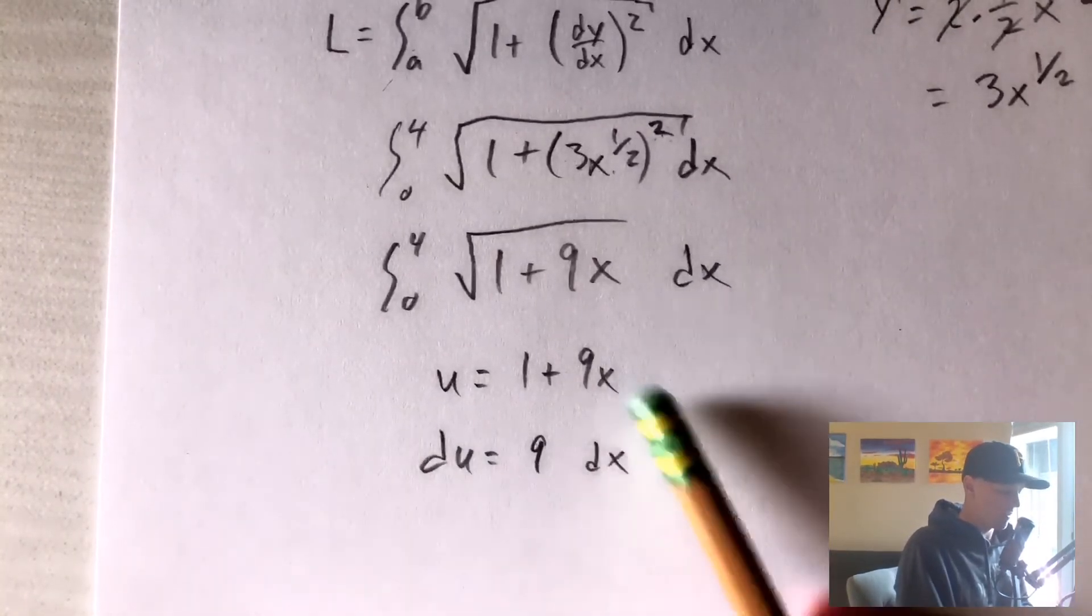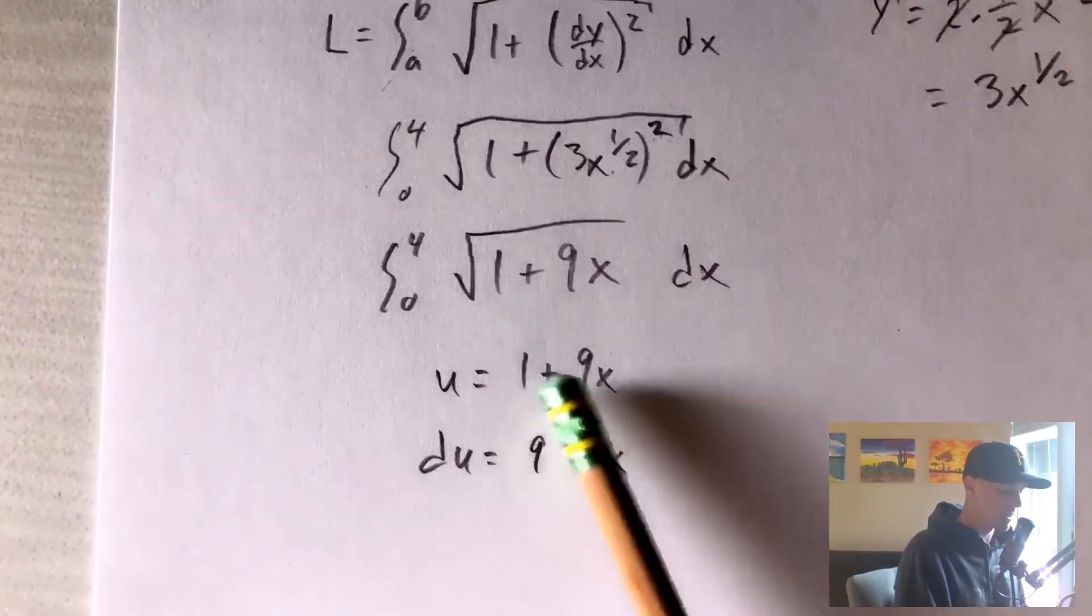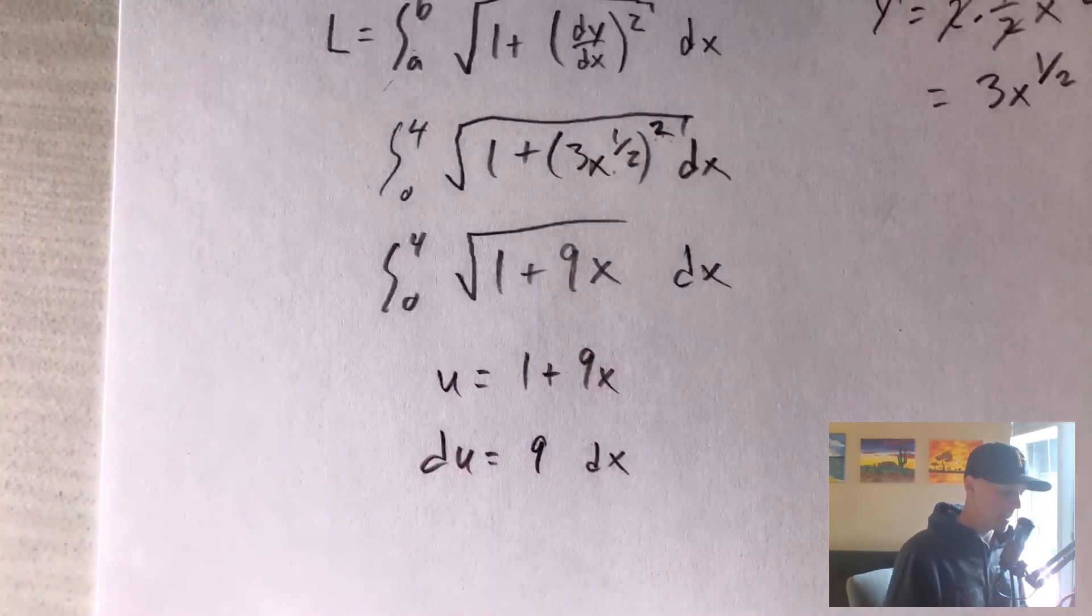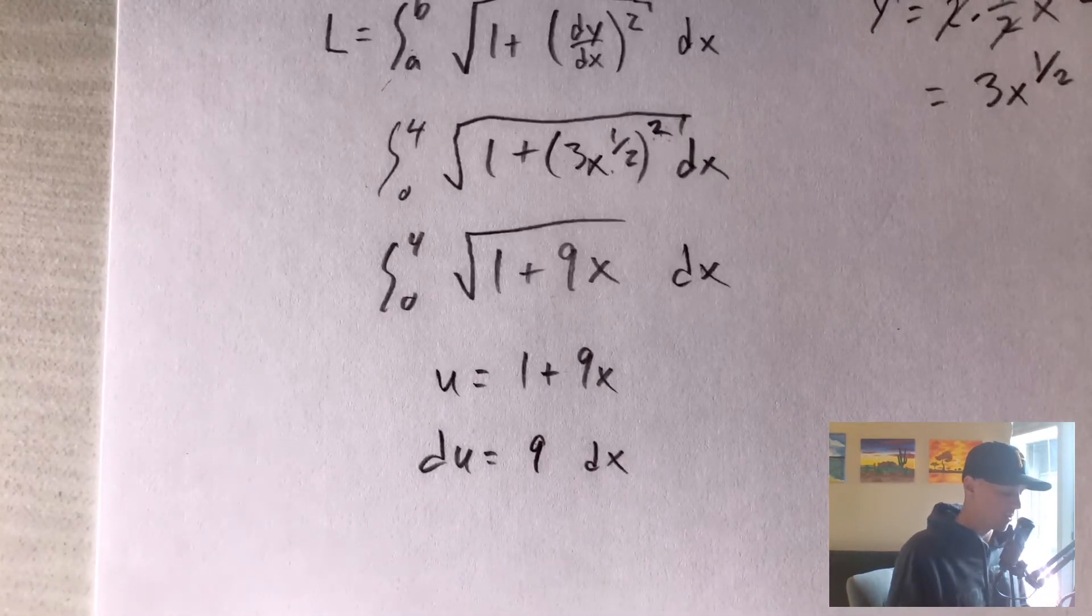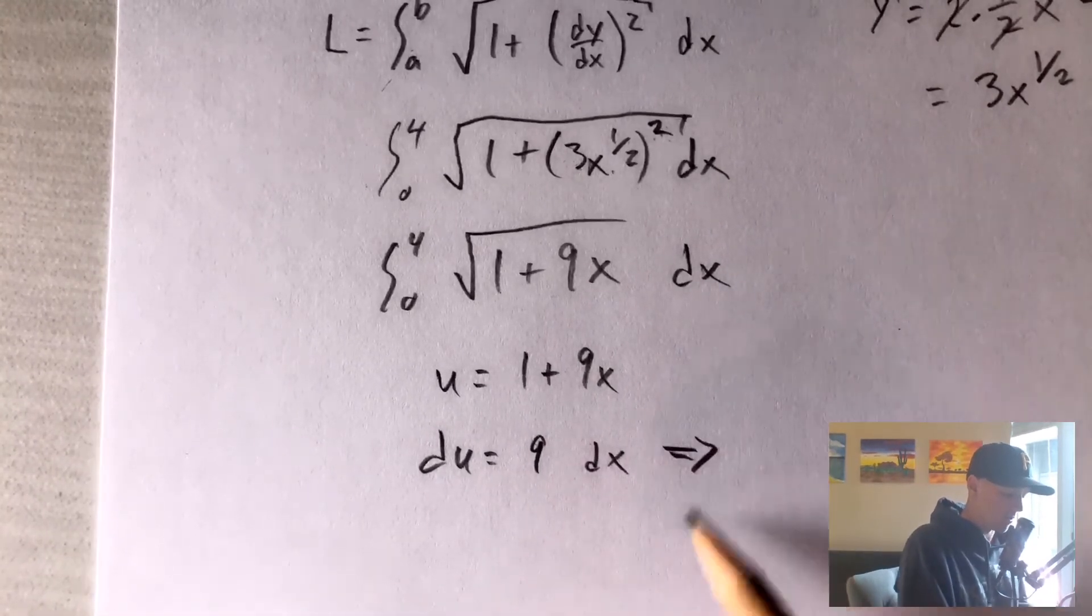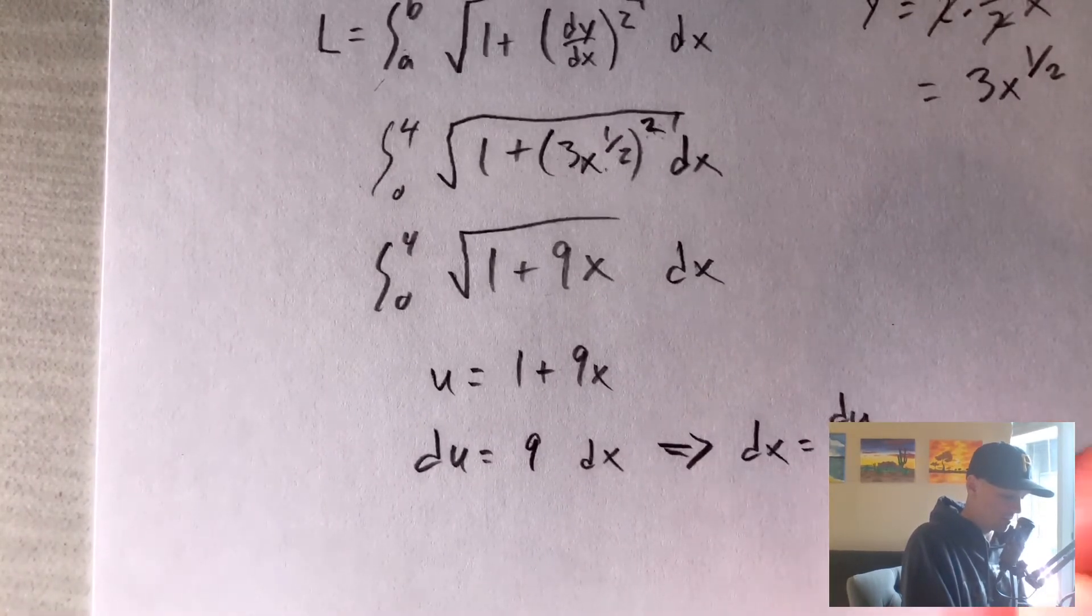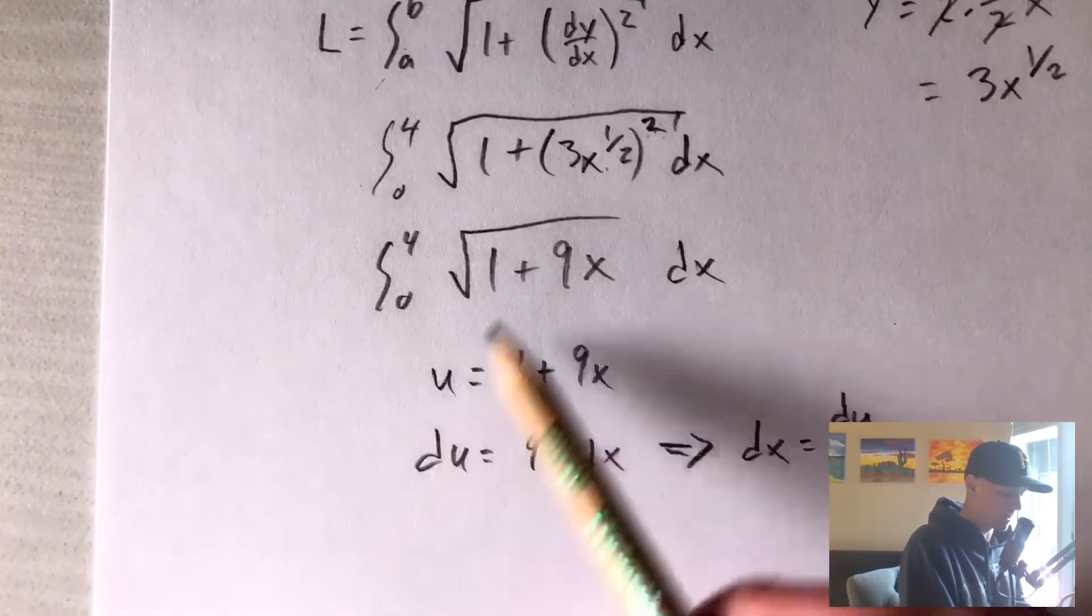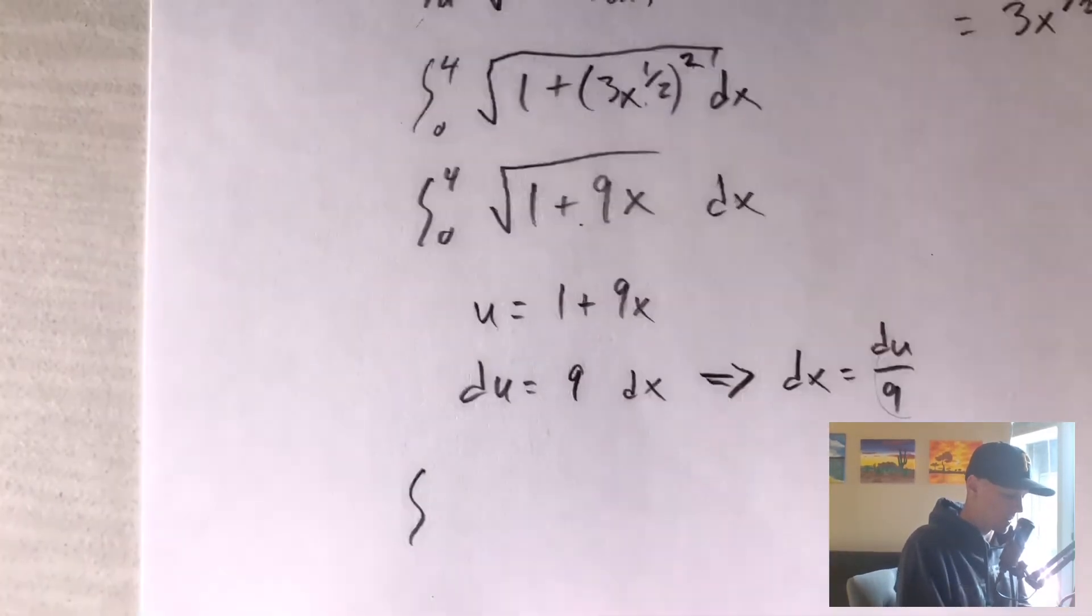So whenever you have something like this where it's just a linear function as some inner function, a lot of times u substitution and just calling that inner function your u ends up working out pretty nicely because our du is just going to be a constant. So let's go ahead and do this substitution here. We can use this equation to solve for dx, which would be dx equals du over 9. And now we can plug this in for, or plug u into our equation, plug this in for dx in our equation, and let's see what we get doing that.